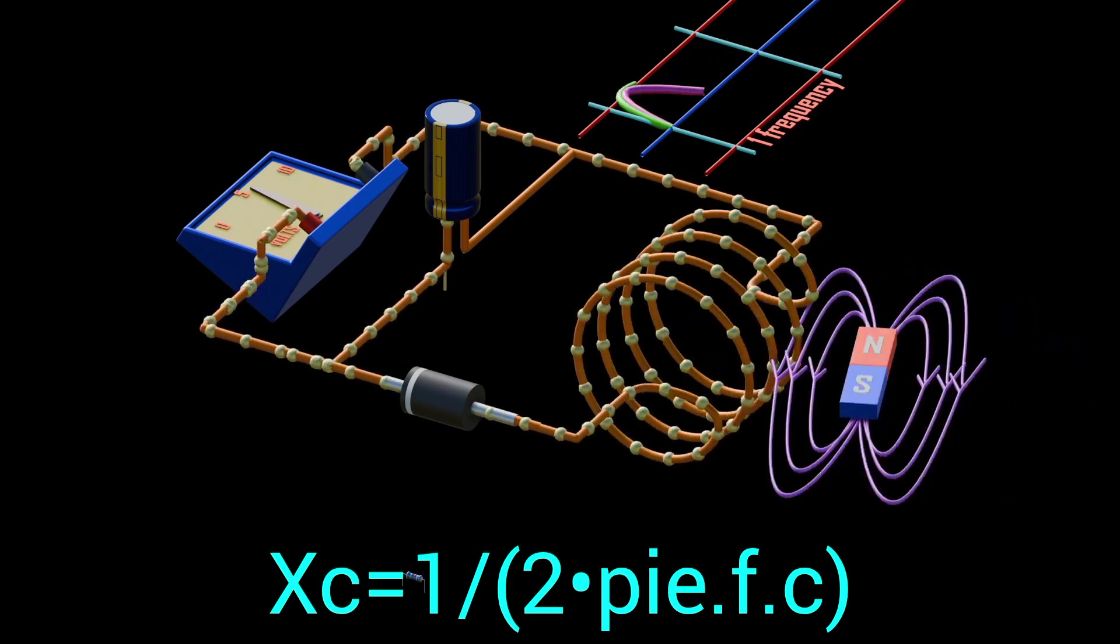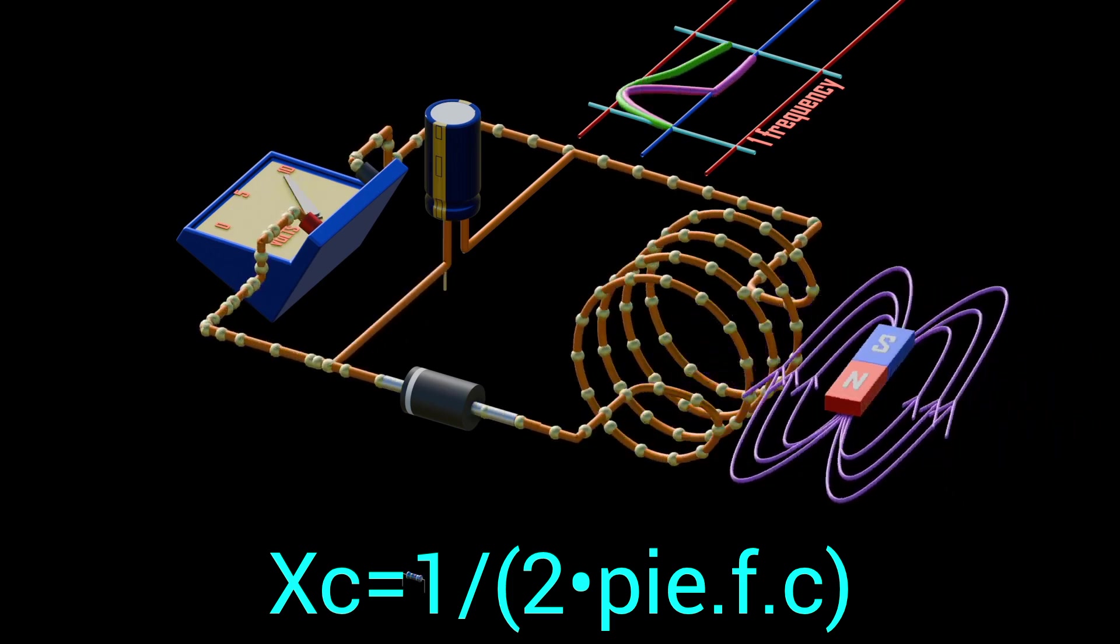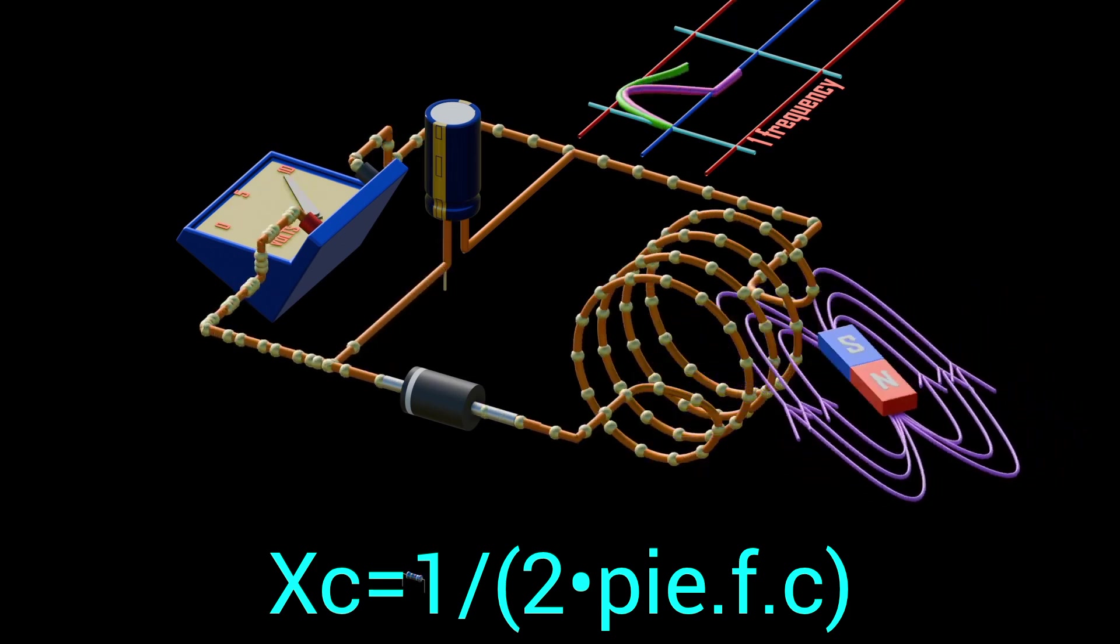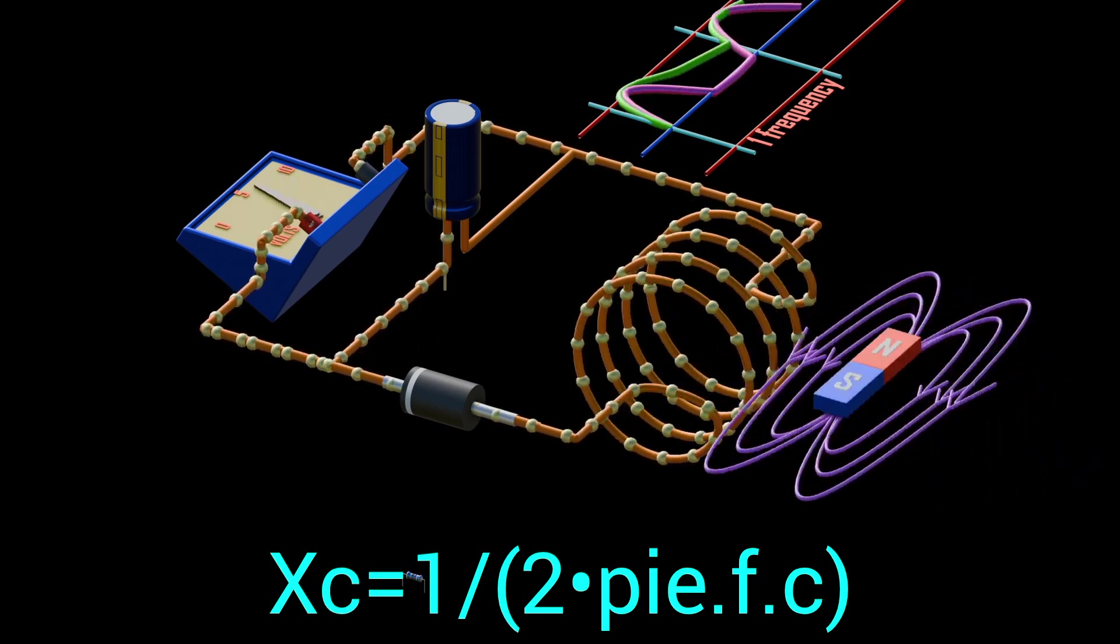Therefore, Xc is equal to 1 over 2 pi fc. From the formula, you can see that if frequency or capacitance is increased, Xc decreases.